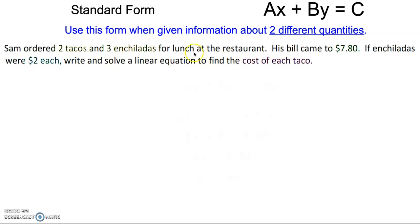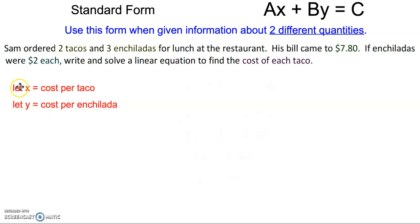So let's first identify what we would set x and y equal to. We're going to let x equal the cost per taco and y equal the cost per enchilada. Those are the two quantities that we're really talking about in this problem — we're talking about tacos and enchiladas.